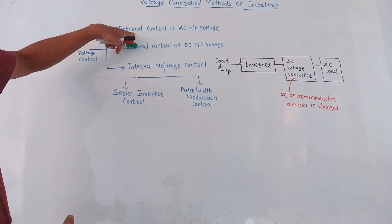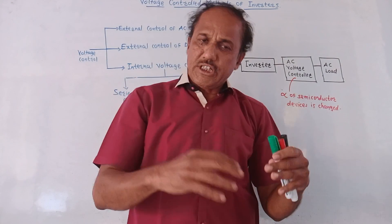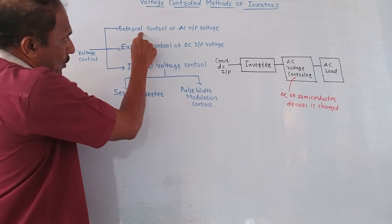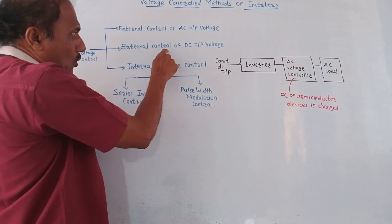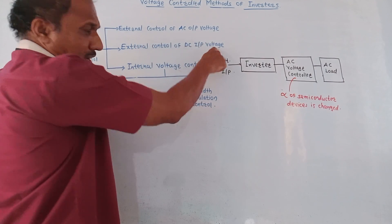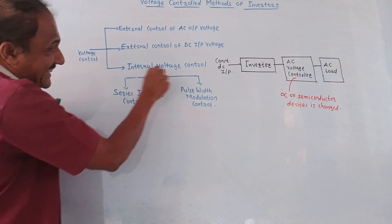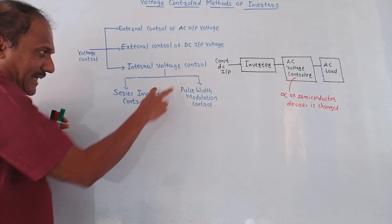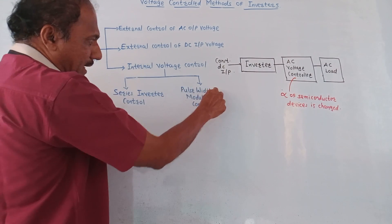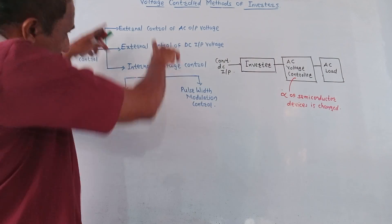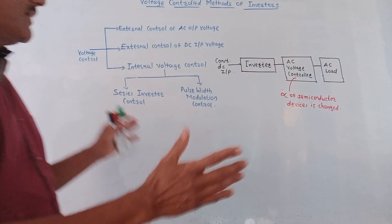The first type is external control of AC output voltage. We know that in the case of an inverter, input is DC and output is AC. The second type is external control of DC input voltage, where we need to control the input DC. The third type is internal voltage control, which again has two subtypes: one is series inverter control, and the second is PWM, that is pulse width modulation control.